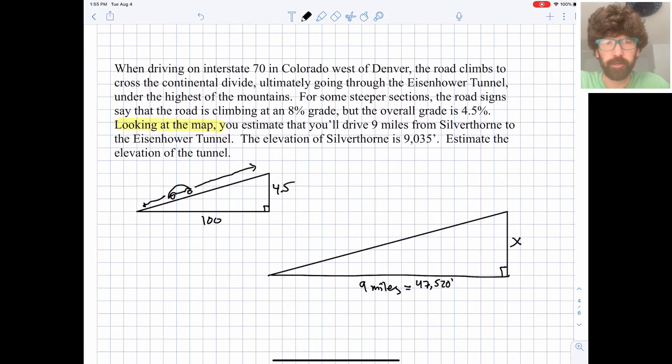And if we can figure out what X is, we could just add that on to Silverthorne's elevation of 9,035 feet and figure out what the height of the tunnel is. So to be clear, the tunnel's up here, and that's the tunnel that goes through the highest of the peaks and down to the other side towards the Pacific Ocean. And this is Silverthorne right here, a little old mining town.